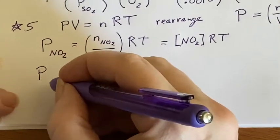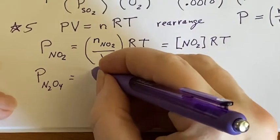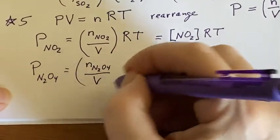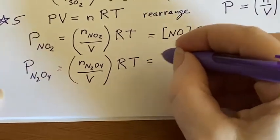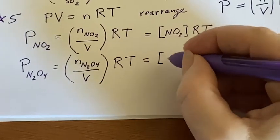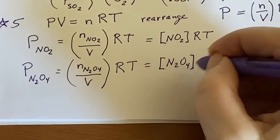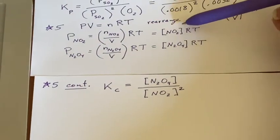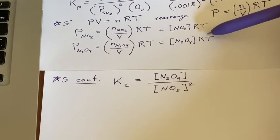Likewise, I can say that the pressure of the N2O4 is the number of moles of N2O4 over the volume. I'll separate those off and have the RT here, which would mean that the pressure is related to the concentration of N2O4, once again, times RT. We've managed to relate what the pressure of the gas is to the concentration of the gas, recognizing that because of the gas laws, we have RT in here as a factor.